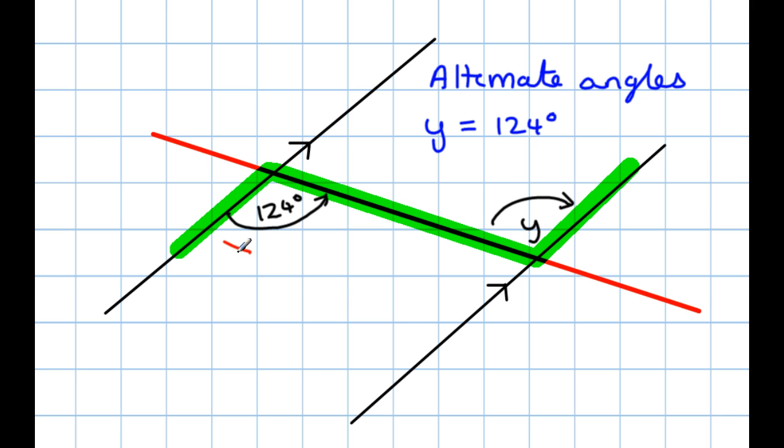Let's have a look again at why we use the word alternate. The angle 124 is below its parallel line. The angle Y, the unknown one, is above. The angle 124 degrees is to the left, if you look along the line of the crossing line, the transverse. Angle Y is to the right. So, they're in alternate different positions, where one is below, one is above, one is to the left, one is to the right.